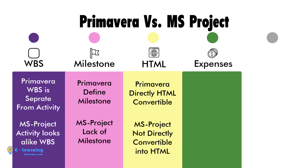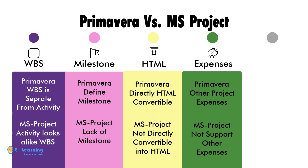Besides the standard project expenses, Primavera allows you to define additional expenses like traveling cost or training cost, but MS Project lacks this feature.